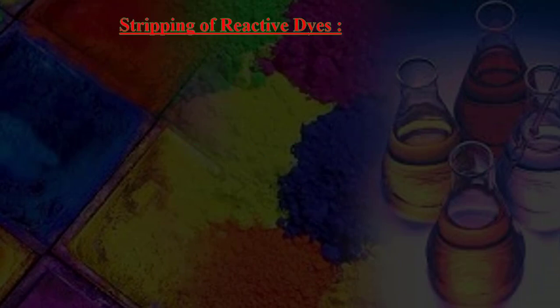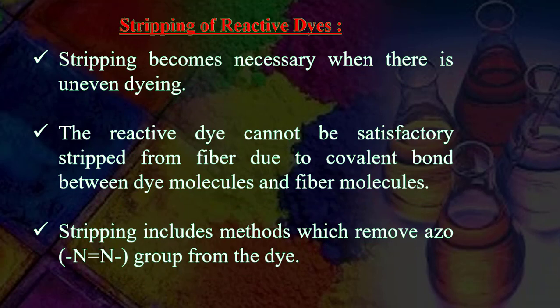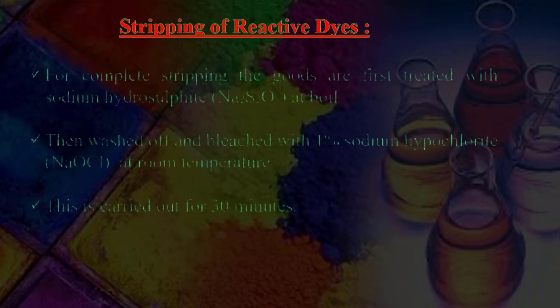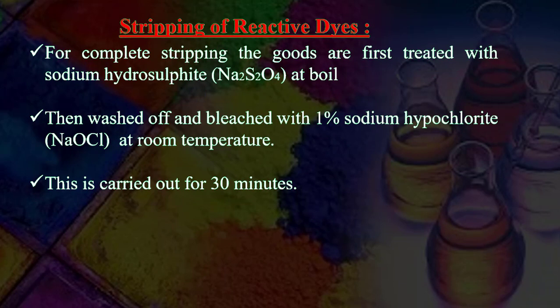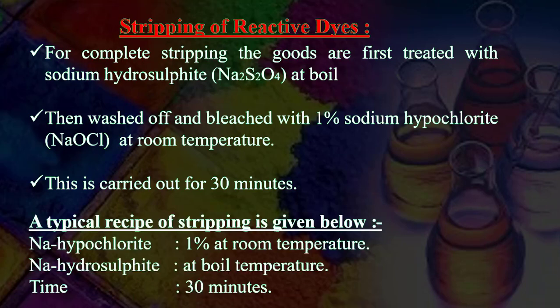Stripping — to remove color from the fabric. Stripping becomes necessary when there is uneven dyeing. The reactive dye cannot be satisfactorily stripped from fiber due to the covalent bond between dye molecules and fiber molecules. Stripping methods remove the azo group from the dye. For complete stripping, goods are first treated with sodium hydrosulfite and sodium sulfite (NaOCl) at boil, then washed off and bleached with 1% sodium hypochlorite (NaOCl) at room temperature for 30 minutes. A typical recipe: Na hypochlorite 1% at room temperature; Na hydrosulfite at boil; time: 30 minutes.